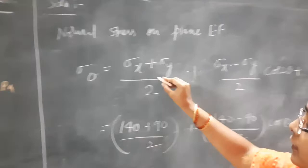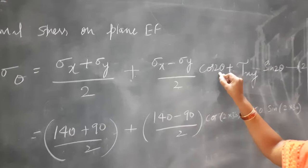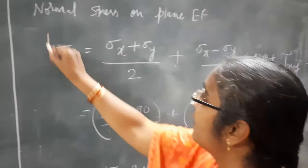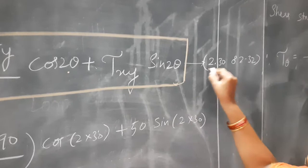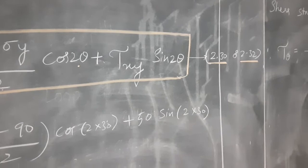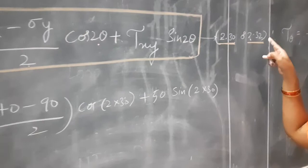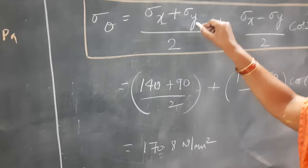The normal stress on plane EF can be found using the formula: sigma_theta = (sigma_x + sigma_y)/2 + (sigma_x − sigma_y)/2 × cos(2θ) + tau_xy × sin(2θ). This formula is available in your data handbook — equation number 2.30 in the old data handbook, or equation number 2.32 in the new data handbook.